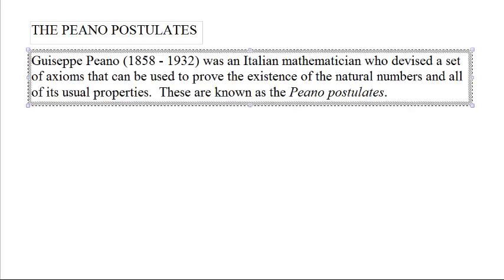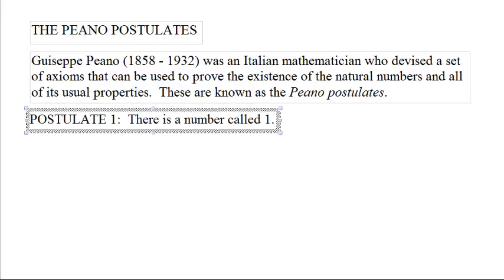The Peano Postulates. Giuseppe Peano, born in 1858 and died in 1932, was an Italian mathematician who devised a set of axioms that can be used to prove the existence of all the natural numbers and all of their usual properties. These are known as the Peano Postulates.